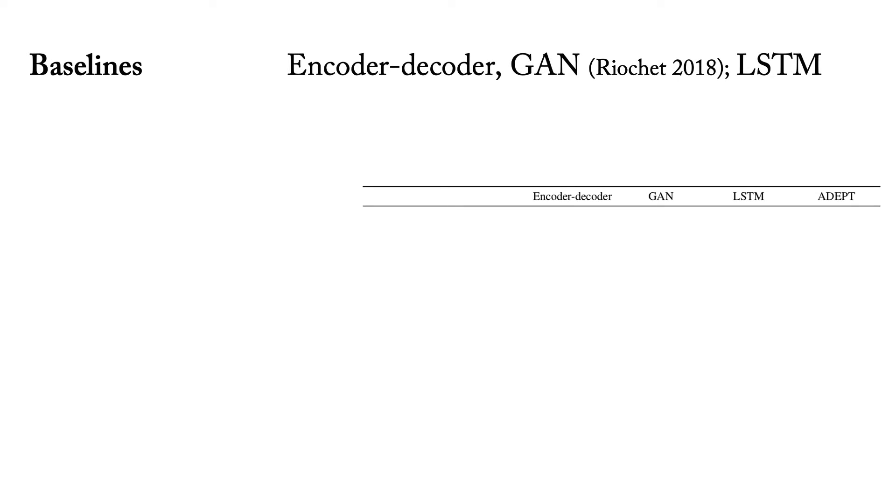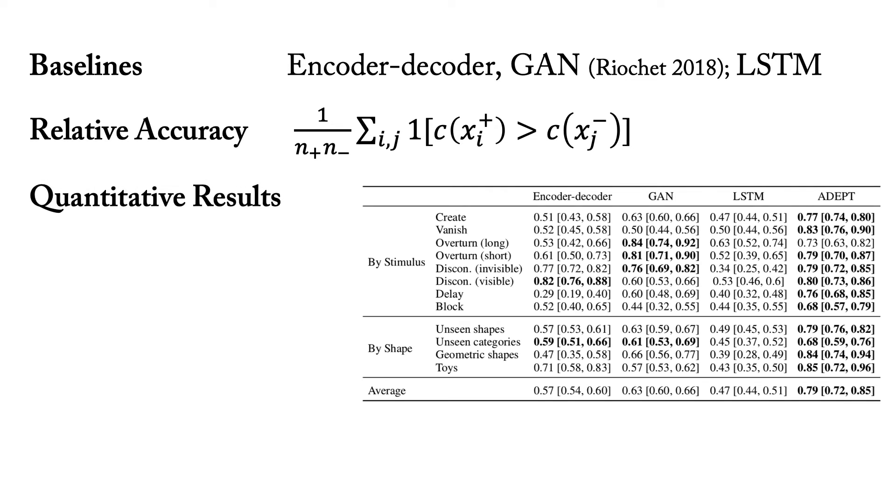We compare ADEPT to previous models based on video prediction, including encoder-decoder, GAN, and LSTM. We use relative accuracy to measure how well the models discriminate violations from control. ADEPT performs best or ties in seven of the eight scenarios in our stimuli set. It is the only model to perform above chance in all scenarios.